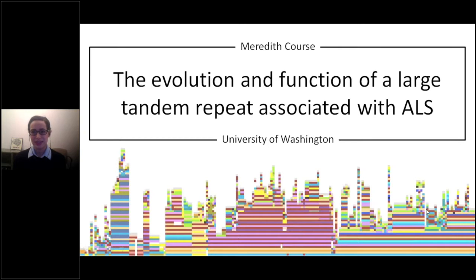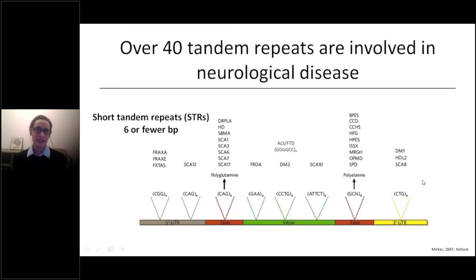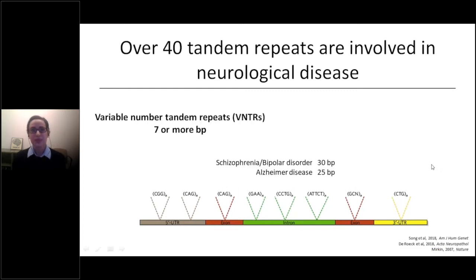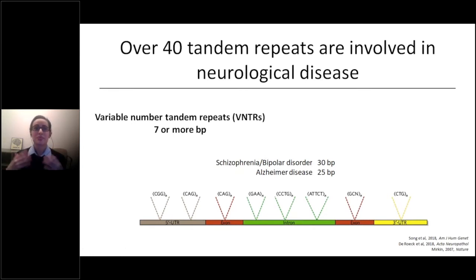Let's talk about tandem repeats. Over 40 tandem repeats are currently known to be involved in neurological disease, and the vast majority of these are short tandem repeats or STRs — repeats with a repeat unit of six or fewer base pairs. But with the advent of long-read sequencing technology, we've seen evidence for the role of much larger tandem repeats, or variable number tandem repeats, in neurological disease as well.